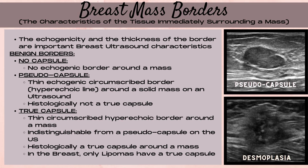The third type of benign border is a true capsule — a thin, circumscribed, hyperechoic border around a mass, indistinguishable from a pseudo capsule on ultrasound. However, histologically, a true capsule forms an actual capsule completely around the mass. In the breast, the only mass with a true capsule histologically is a lipoma. Since lipomas tend to be hyperechoic, the true capsule is often not distinguishable on ultrasound, so the vast majority of breast masses in which a capsule is visualized will have a pseudo capsule.